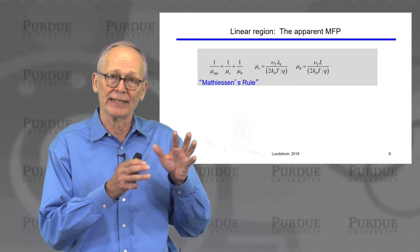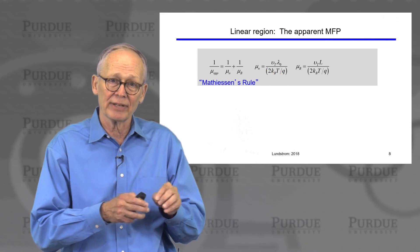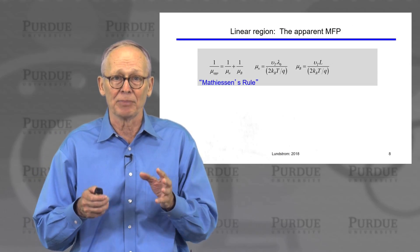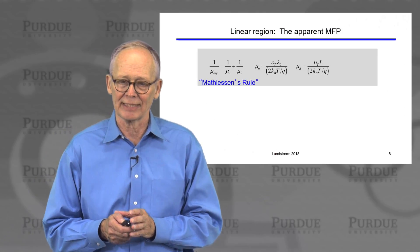In our case, we're combining a mobility due to scattering and a mobility due to the ballistic effects and getting what we're calling an apparent mobility due to the combination of those two effects.